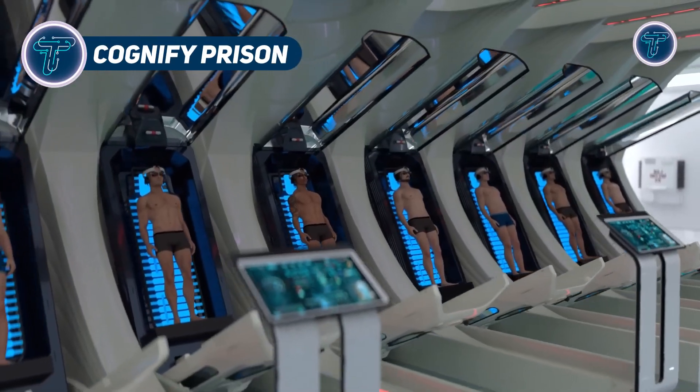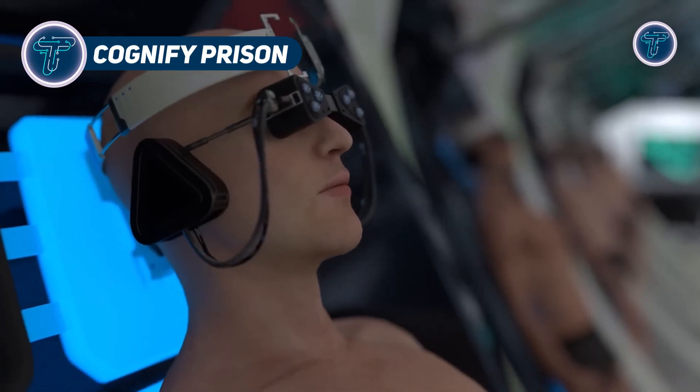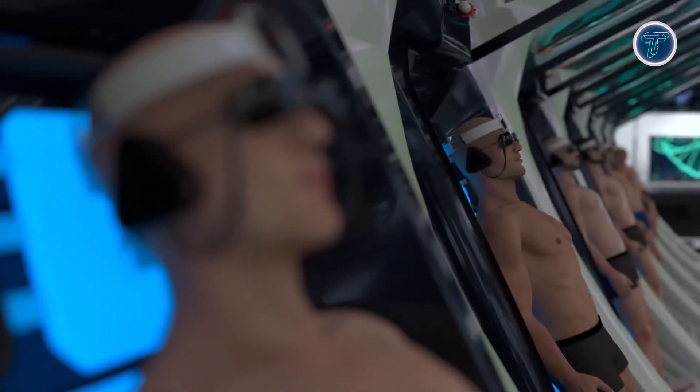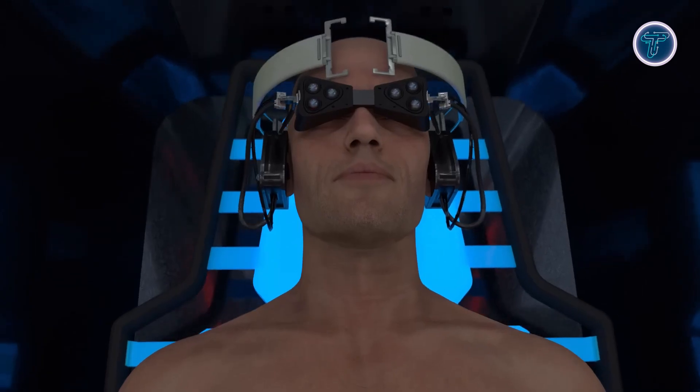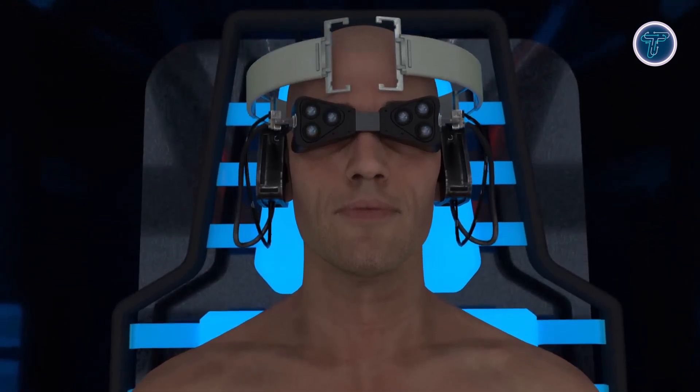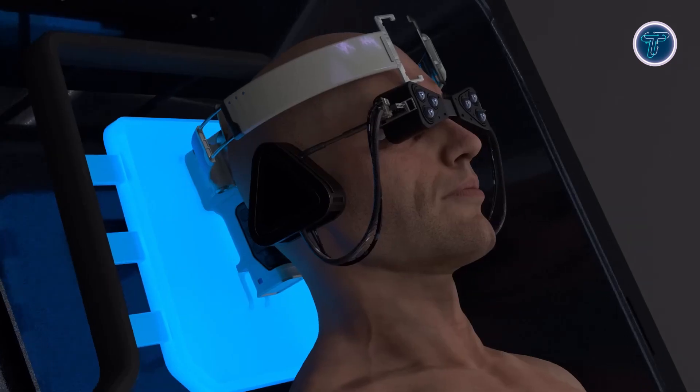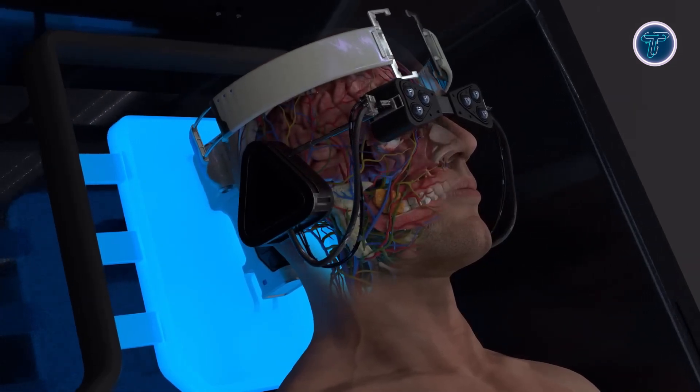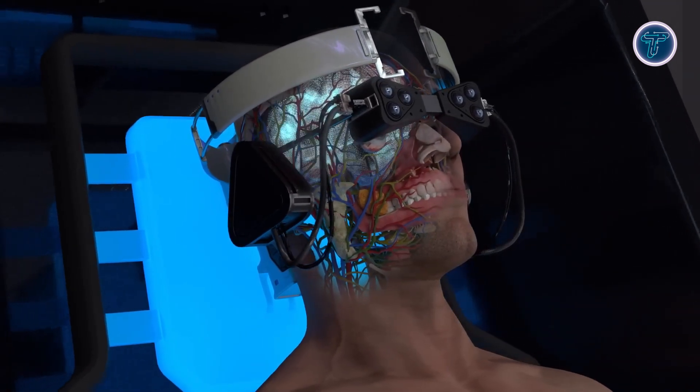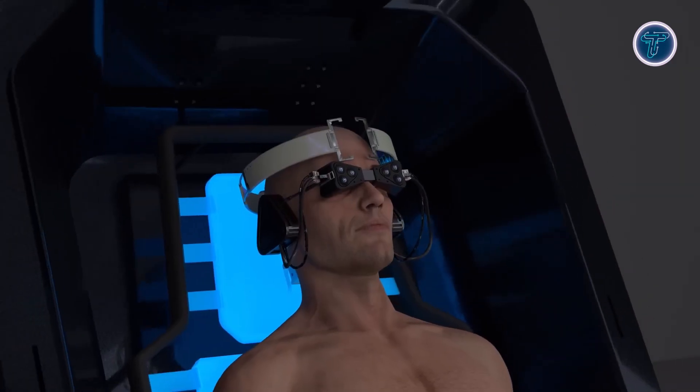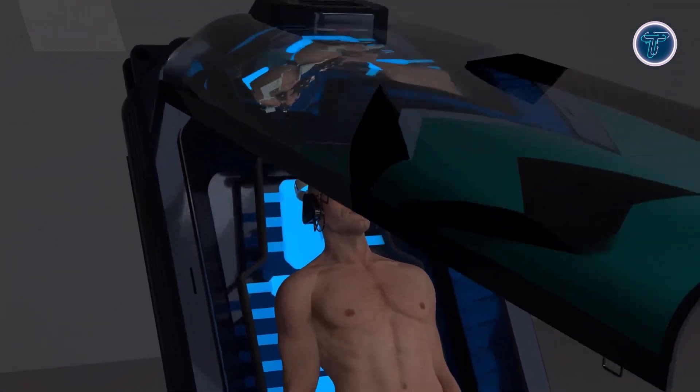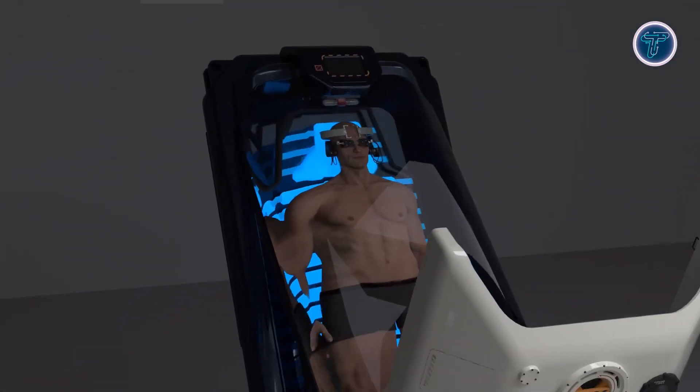Cognify Prison. Cognify Prison is a speculative concept that reimagines criminal rehabilitation using AI and brain interface technology. Instead of serving traditional long-term sentences, inmates would experience AI-generated memories of their crimes through a brain implant and VR-like headset. The system maps neural pathways in areas like the hippocampus, amygdala, and prefrontal cortex, allowing offenders to relive their actions from the victim's perspective.